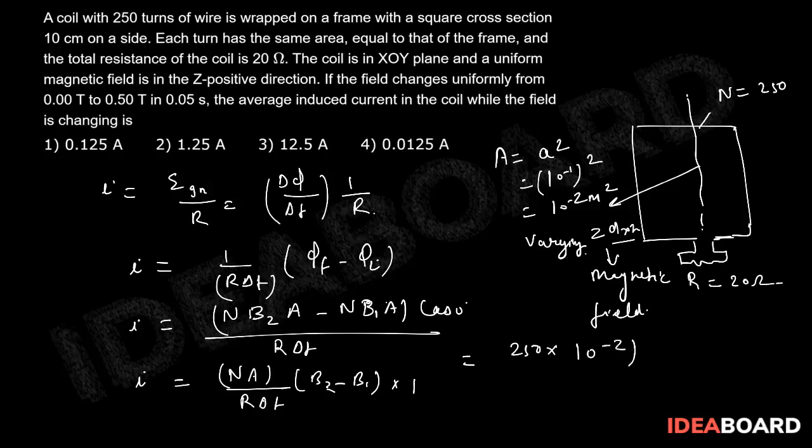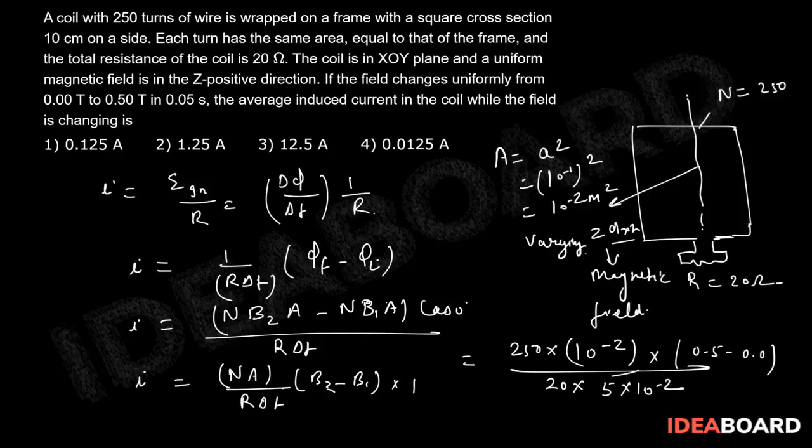So 10 to the power minus 2 meter squared into B2 minus B1 which will be 0.5 minus 0.0 divided by R is 20 and delta T is 0.05 which I can write as 5 times 10 to the power minus 2.